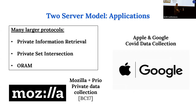This model might seem a bit contrived, but because you can build so many efficient protocols in this model, it's actually used quite a bit in practice. Many U.S. states, as well as Apple and Google, use a two-server protocol to collect COVID data. Mozilla also uses a multi-server protocol to collect and store private browser data.